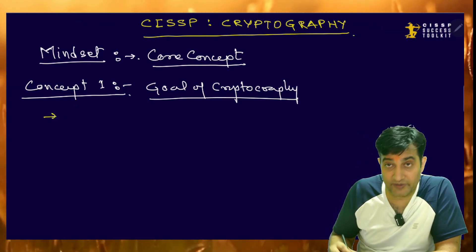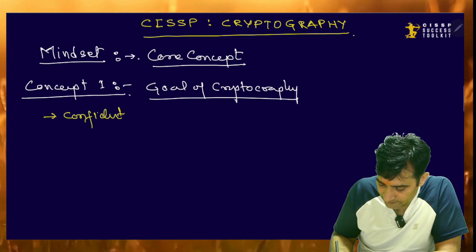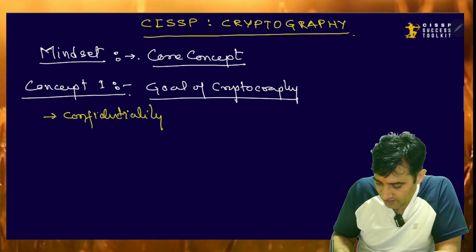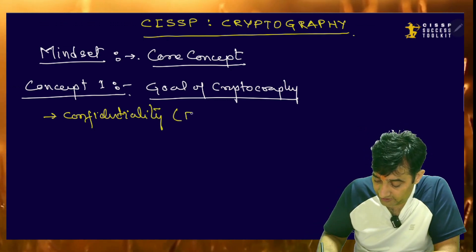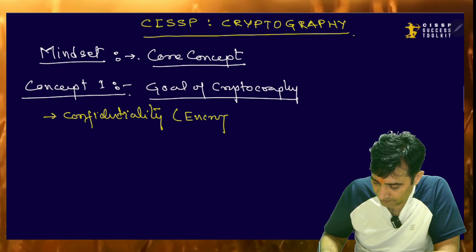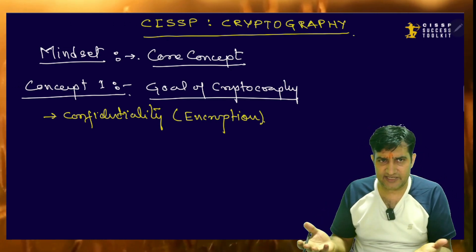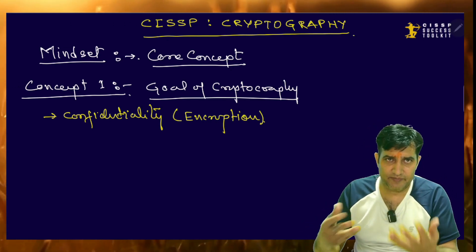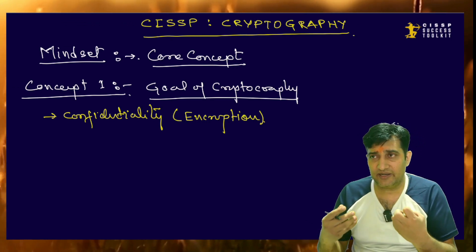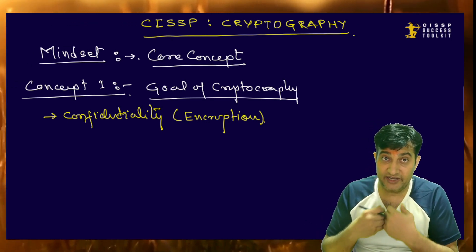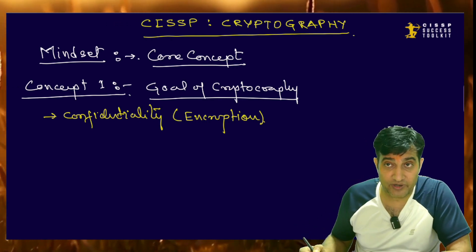The goals of cryptography: number one is to provide confidentiality. When we talk about confidentiality, it is more about encryption. By this way, even if your data is exposed, your particular API is exposed — anything is exposed — the attacker will not be able to make any use of that particular data because it will be useless for them. So that is cryptography.